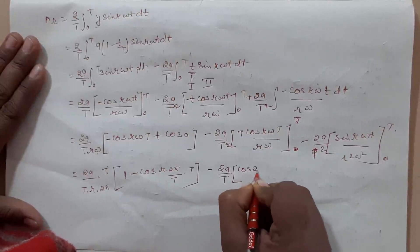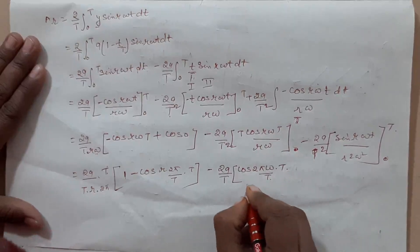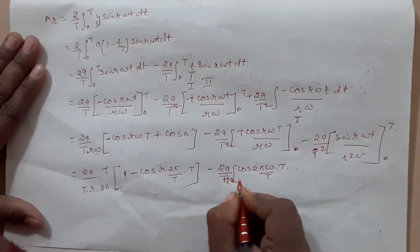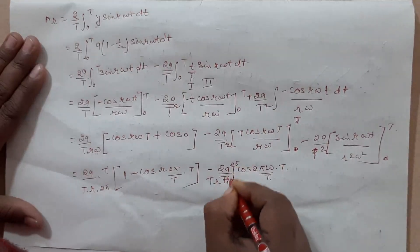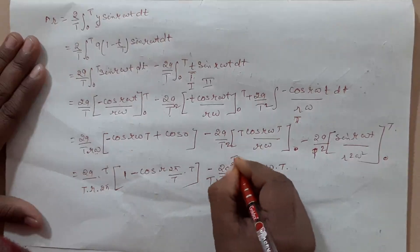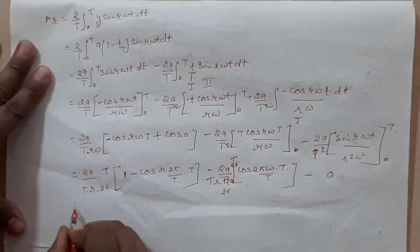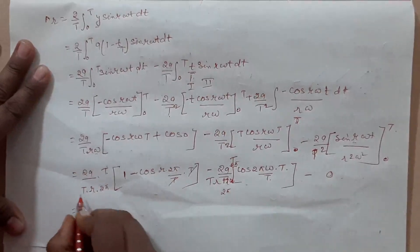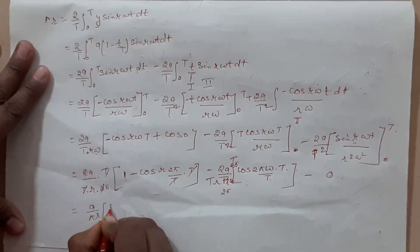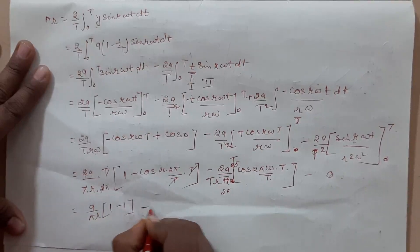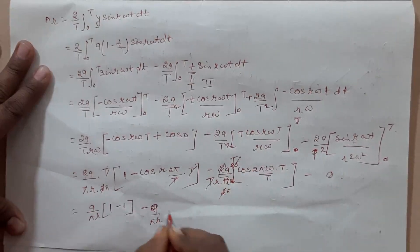Then cos(2π·ωt)·t·r·ω, r·ω ke liye bhi ho jaega. Then 2π and capital T minus sine — value cancel ho jaega 2c2. Then a upon π·r, 1 minus 1, then minus 2c2, tc·tc cancel again, a upon π·r.